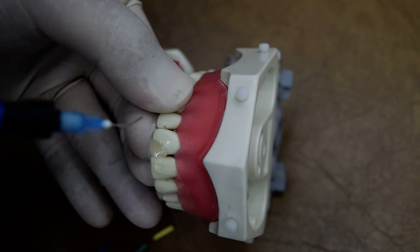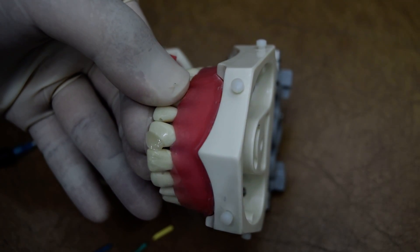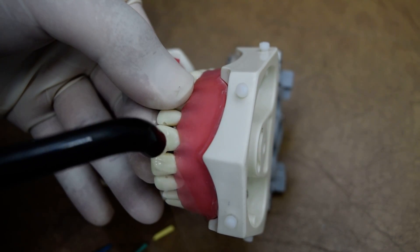So we fill it a bit in excess, then we can trim the excess during finishing stage. Then we will apply the light cure.